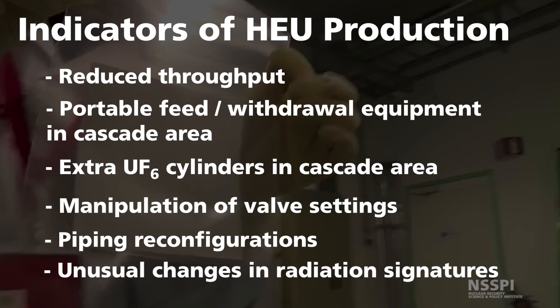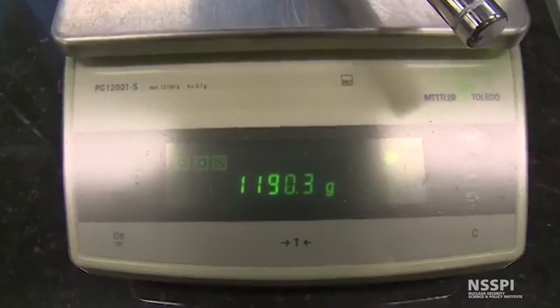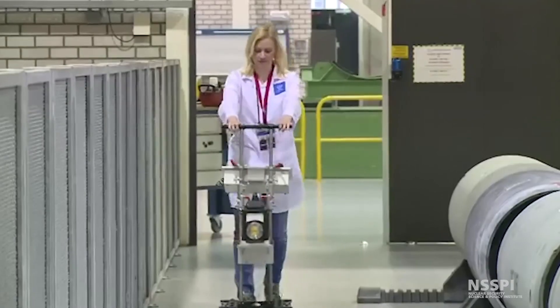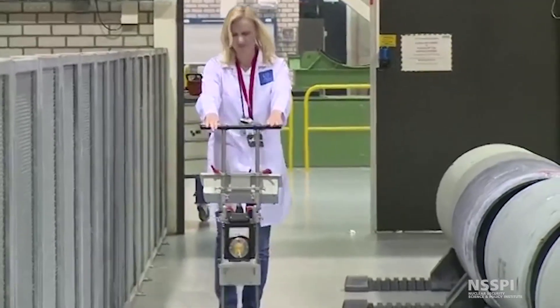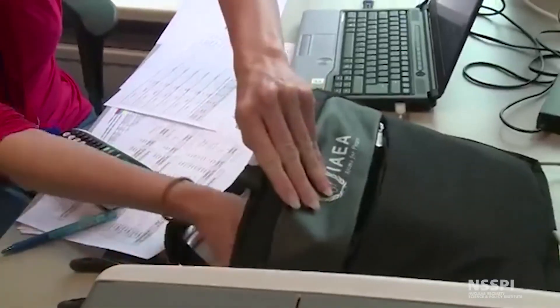Some of the above could also be used to indicate misuse of the facility. Under the additional protocol, wide area environmental sampling is conducted surrounding the enrichment facility to verify that the facility is operated per the declared plans of the state. In conclusion, misuse of the facility and diversion of uranium from the facility can be detected in a timely manner through the comprehensive nature of safeguards tools, strategies, and inspections that are carried out by the IAEA.